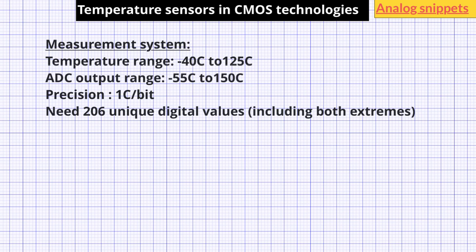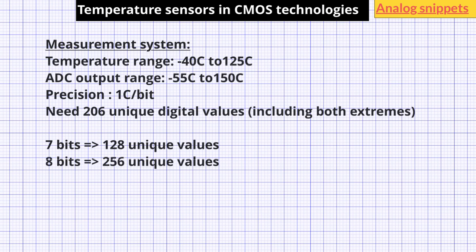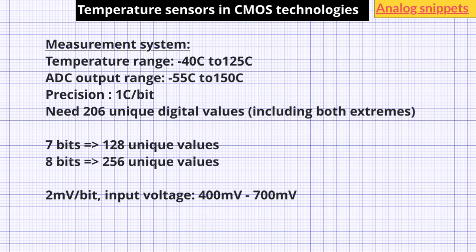With 7 bits we can have 128 unique values, which is clearly not sufficient. With 8 bits we get 256 unique values, which is more than enough. Additionally, each bit change needs to represent about 2 millivolt change in voltage, and the input voltage is in the range of 400 to 700 millivolts. So if the ADC measures voltage between 0V to 1V, you would probably need 9 bits. Keep in mind that 2 mV/K is just a rule of thumb — in modern technologies the actual value can be as low as 1.5 mV/°C. Keeping all constraints in mind, you would need about 8 to 10 bit ADC. For moderate accuracy requirements of 5°C, 6 to 7 bit ADCs are commonly used.